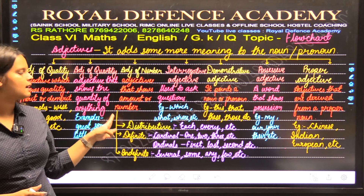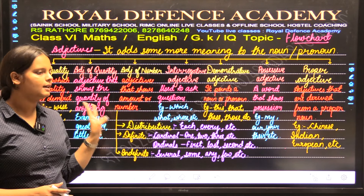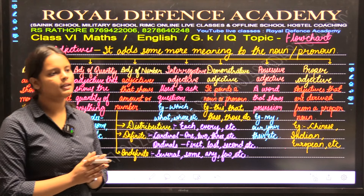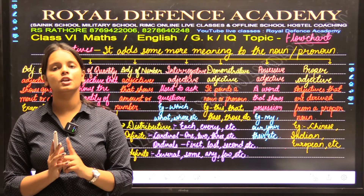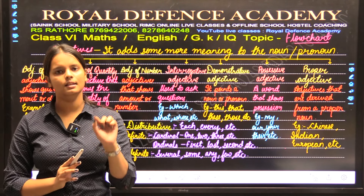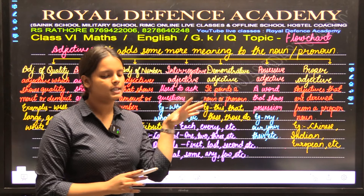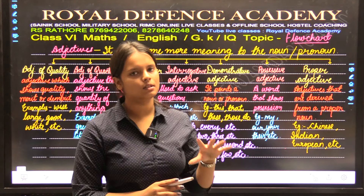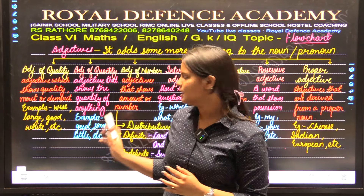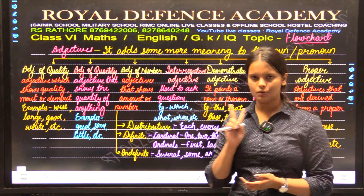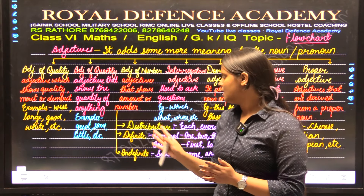Adjective of number is again divided into three parts: distributive, definite and indefinite. Distributive is that type of adjective when we focus on each and everything — that is, one and only, everything that is present in the class or species we are talking about will be taken into consideration. There are two distributive adjectives commonly used: each and every.